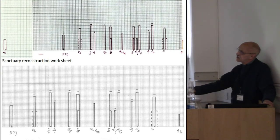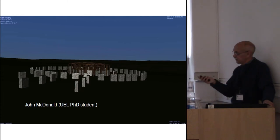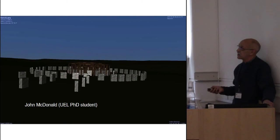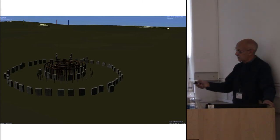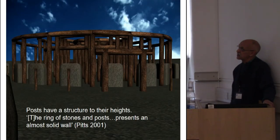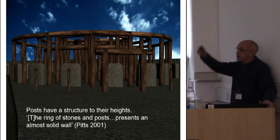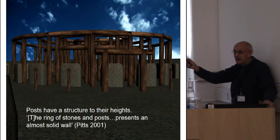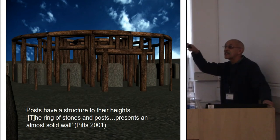Here's my worksheet from constructing the size and height of the posts. The posts are not regular in the change of their height — they have a structure to them. My PhD student John MacDonald, using games technology, built our model of the sanctuary with stones and posts together in one integrated monument. Here it is in its landscape — there's Silbury Hill, Windmill Hill, and Waden Hill which separates the two chalk structures. The posts have a structure to their heights which doesn't lend itself to the idea of a maze — when you walk through a maze, the height is the same throughout.